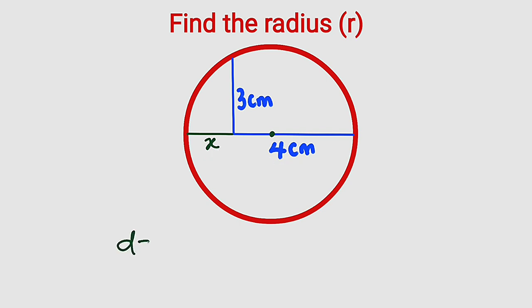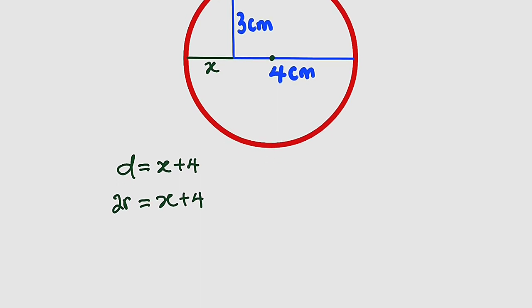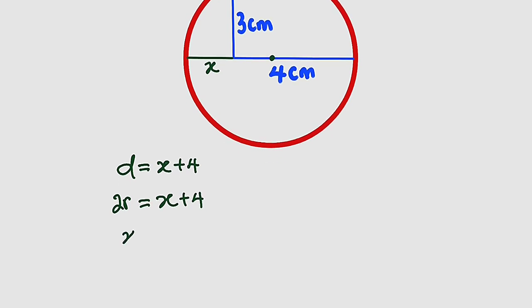So the diameter D is equal to x plus 4. And we know that radius is nothing but half of a diameter. We can write radius in terms of diameter because two radii form a diameter. And hence, 2R is equal to x plus 4. And to make x the subject, we can say that x is equal to 2R minus 4. Let us call this equation number 1.